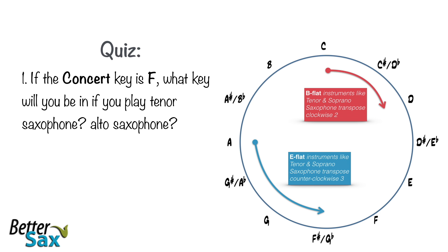Take this quiz. If the concert key is F, what key will you be in if you play tenor saxophone? Alto saxophone? Tenor will be G, alto is D.